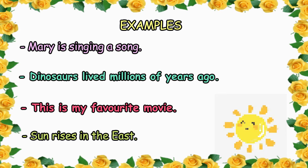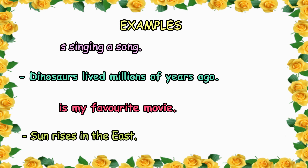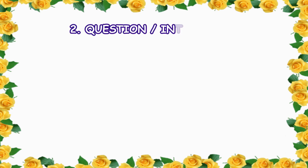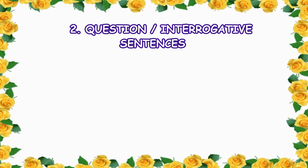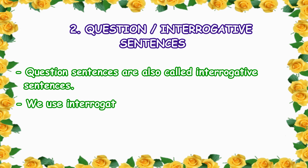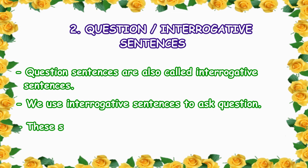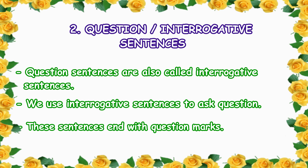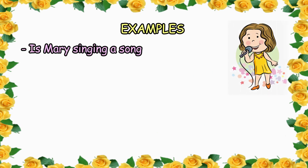Or: this is my favorite movie, or sun rises in the east — these all are statement sentences because we are sharing a piece of information or fact. Our second type is question or interrogative sentences. We use interrogative sentences to ask questions. These sentences end with question marks.